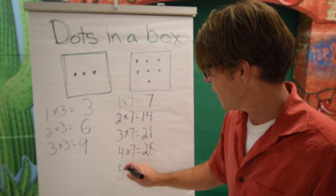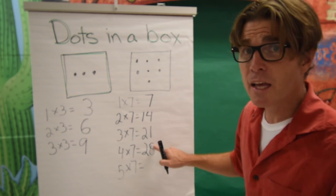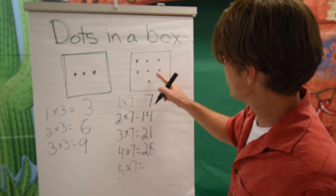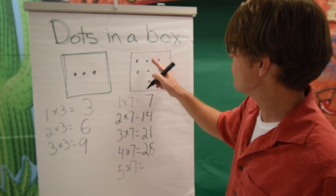We're up to five times seven. We're at twenty-eight. Say twenty-eight. Twenty-nine, thirty, thirty-one, thirty-two, thirty-three, thirty-four, thirty-five.